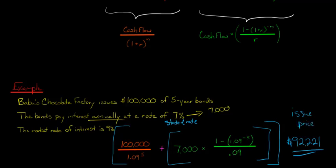So when an investor is going to potentially buy Babu's Chocolate Factory's bonds, they're not going to pay $100,000. I know it seems silly because you're thinking, they're going to receive $100,000 five years from now, and they're going to get the interest, the 7%. So why wouldn't the investor just pay $100,000?